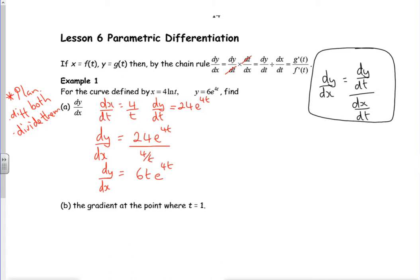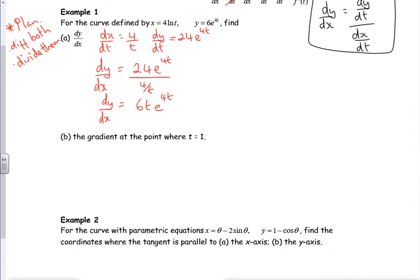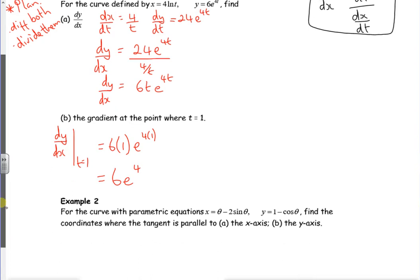So dy/dx will be 6t e to the 4t. That's quite nice, just differentiate both and divide them. Part b, to find the gradient when t is one. So when t is one, I've got six lots of one, e to the four lots of one, I've just got 6 e to the four, leaving it as exact because that's quite nice.